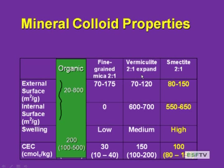In vermiculite, the 2:1 expanding clay, most of the isomorphous substitution occurs in the tetrahedral layer — that's the outside layer, so the charge expression is closer to the surface. In smectite, most of the isomorphous substitution takes place in the octahedral layer, so the expression of charge is a little less at the surface. This differential location of where the bulk of isomorphous substitution occurs explains why vermiculite has a higher CEC than smectite.